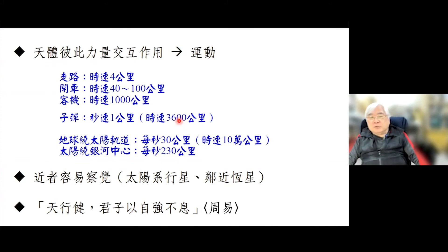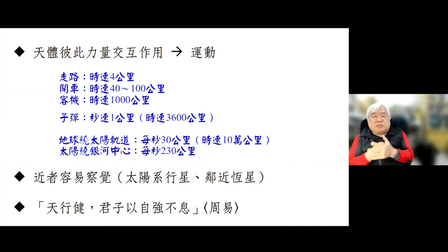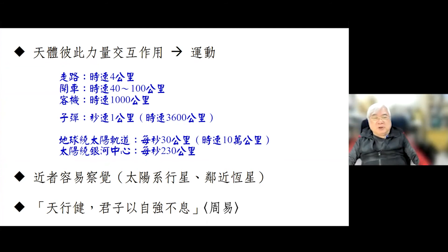我们平常走路散步一个钟头大概走四公里；开车时速大概是40到100公里；喷射客机时速可以达到数百到1000公里；子弹一秒钟可以走一公里，换算时速是3600公里。地球绕太阳的轨道大家都在太空里面运行，没有空气阻力，我们没有觉得它跑得很快，可是事实上每秒钟地球绕太阳是30公里，换算时速就是10万公里。